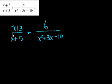So it says x plus 3 over x plus 5 plus 6 over x squared plus 3x minus 10. So when you add fractions, whether you're doing it with algebraic fractions or regular fractions, you have to find a common denominator. We have to find the least common multiple of the denominators here. But I have a suspicion that this x plus 5 goes into this.